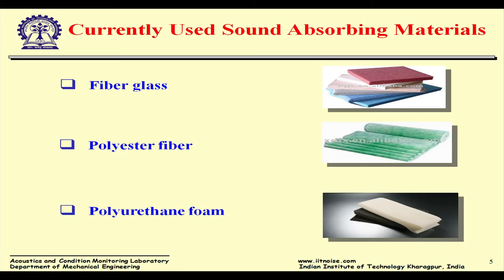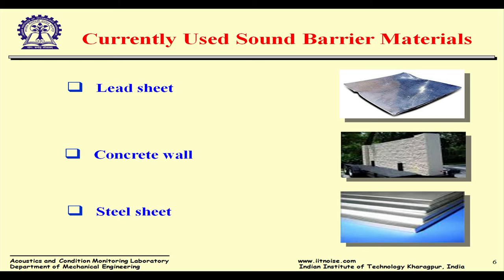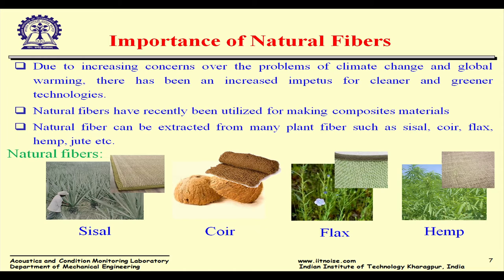Professor Bolton yesterday mentioned the available synthetic sound absorbing materials: fiberglass, polyester fiber, and polyurethane foam. For sound blocking, lead sheet is a very good barrier material, along with concrete wall and steel sheet. Our idea is to develop similar materials using natural materials. The increasing concern over climate change and global warming has increased the impetus for cleaner, greener, and biodegradable technologies.